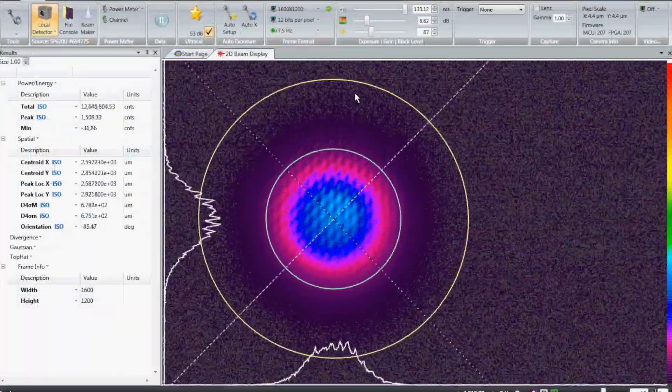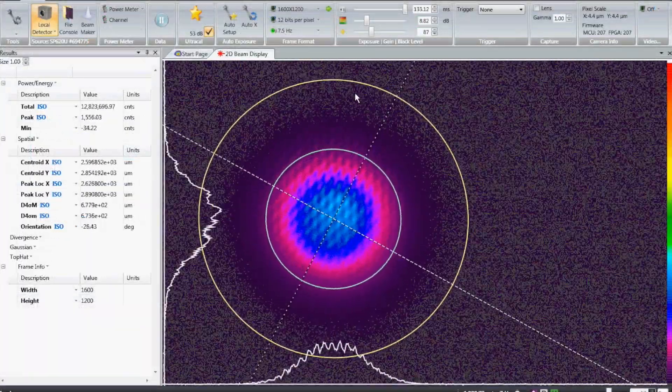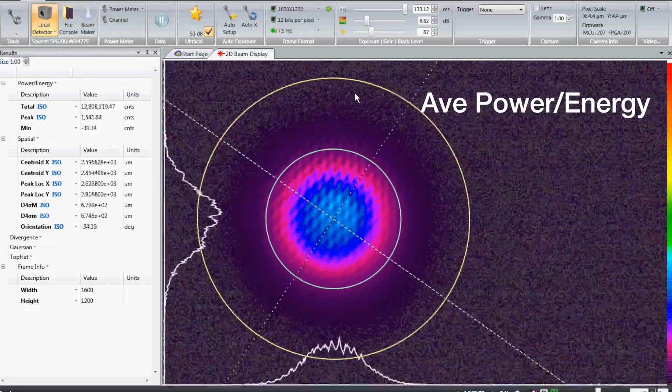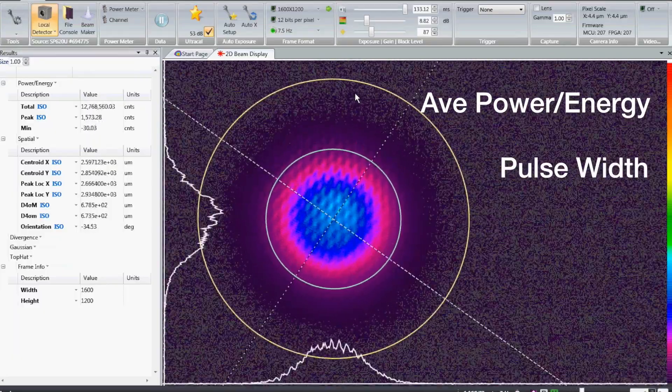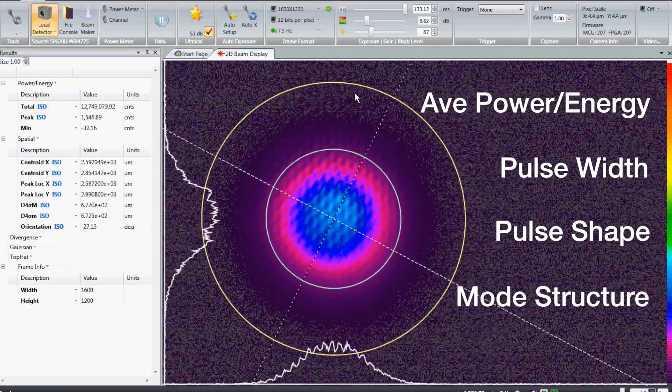Parameters critical to successful material processing include the laser's average power or energy, pulse width, pulse shape, and mode structure.